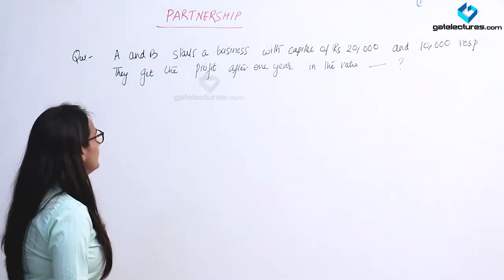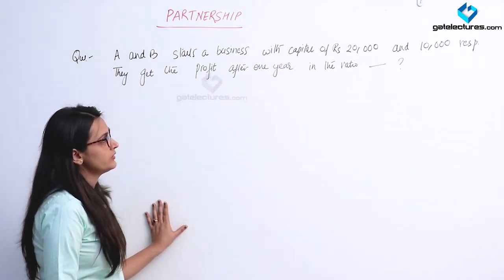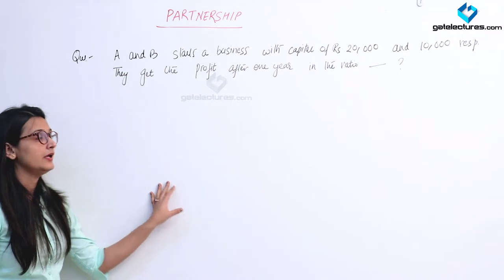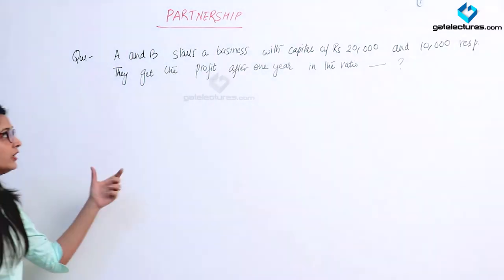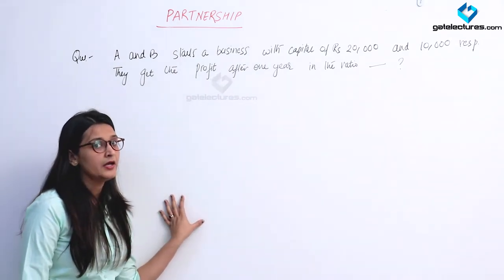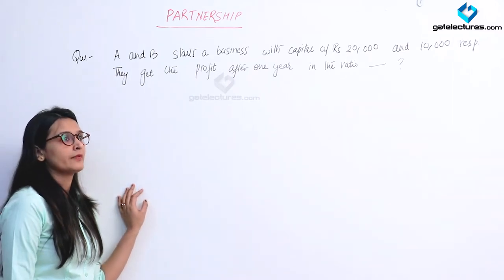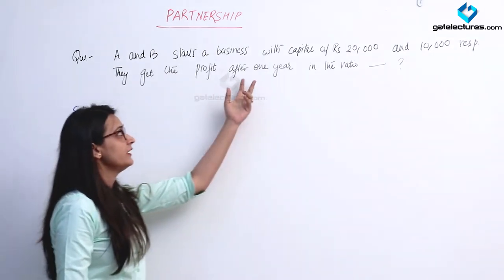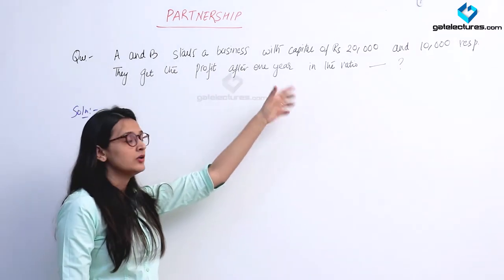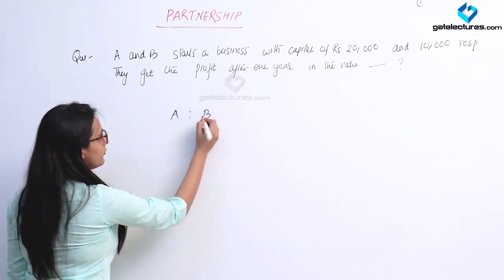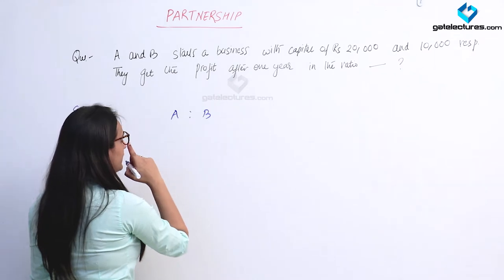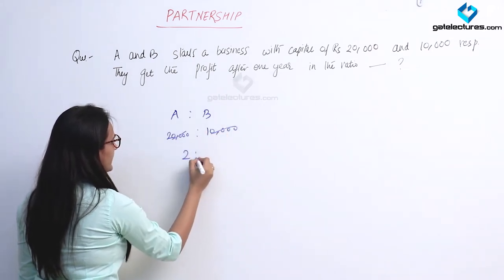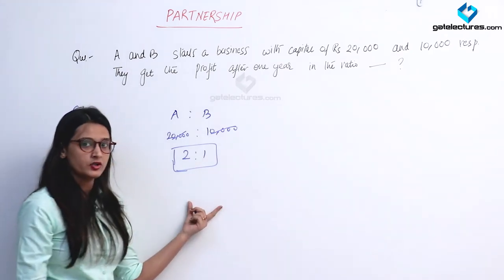Question 1: A and B start a business with capital of Rs. 20,000 and Rs. 10,000 respectively. Find their profit ratio after 1 year. Since the time period is the same, the profit ratio equals the capital ratio. A invested 20,000 and B invested 10,000, so solving the ratio gives A : B = 2 : 1. This is their profit ratio after 1 year.